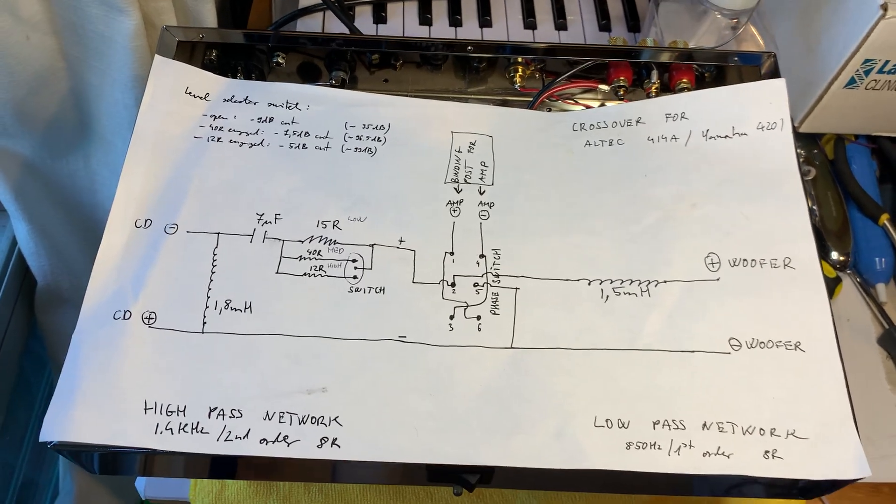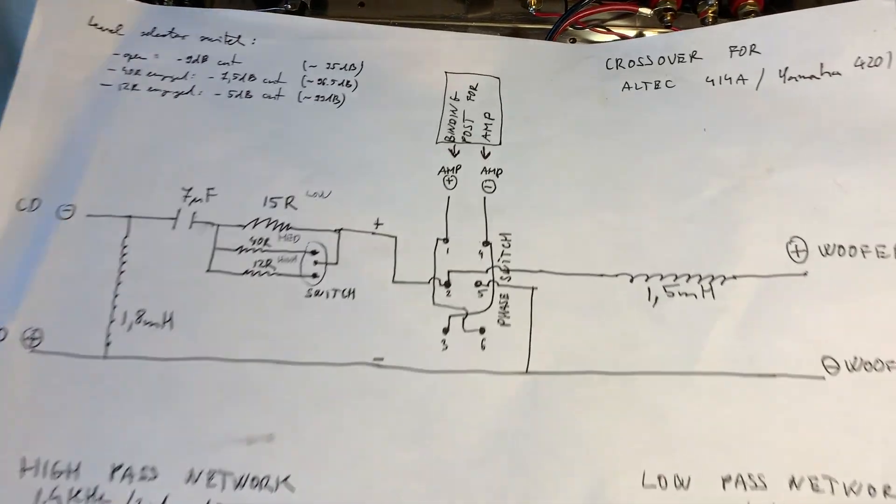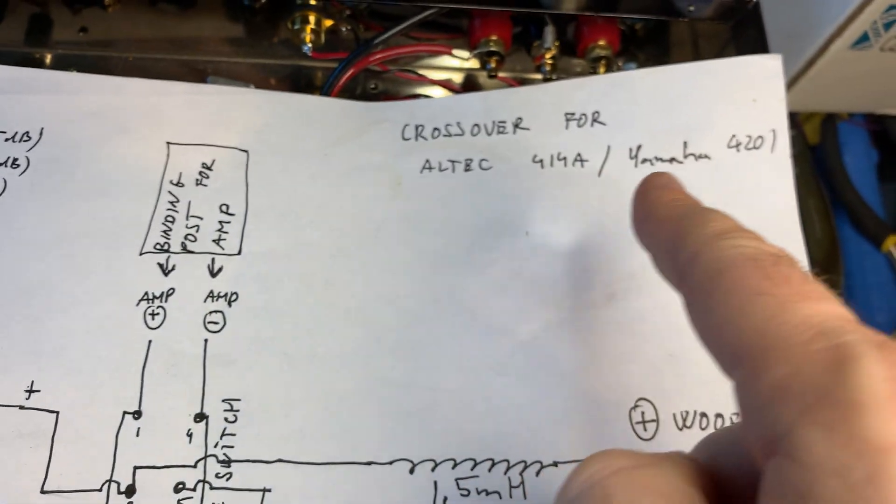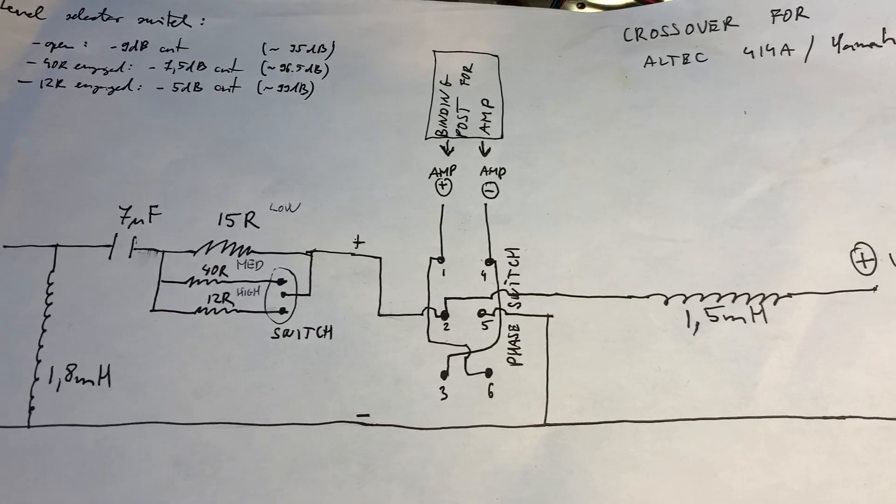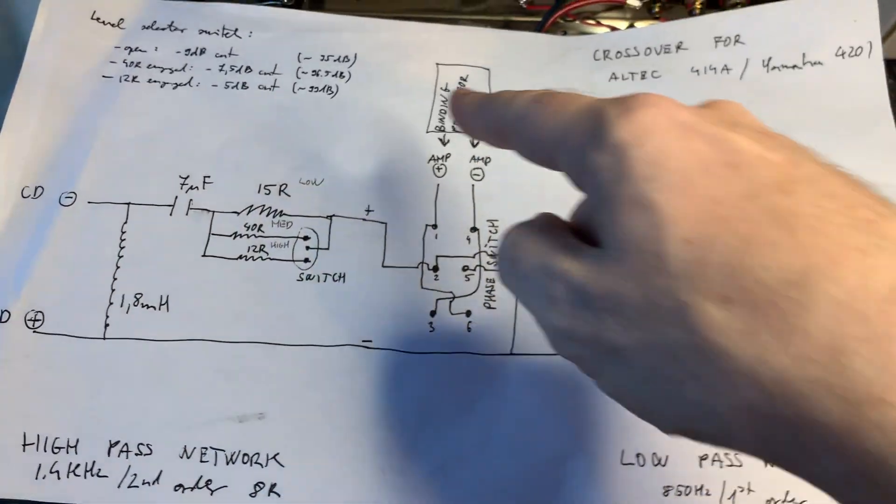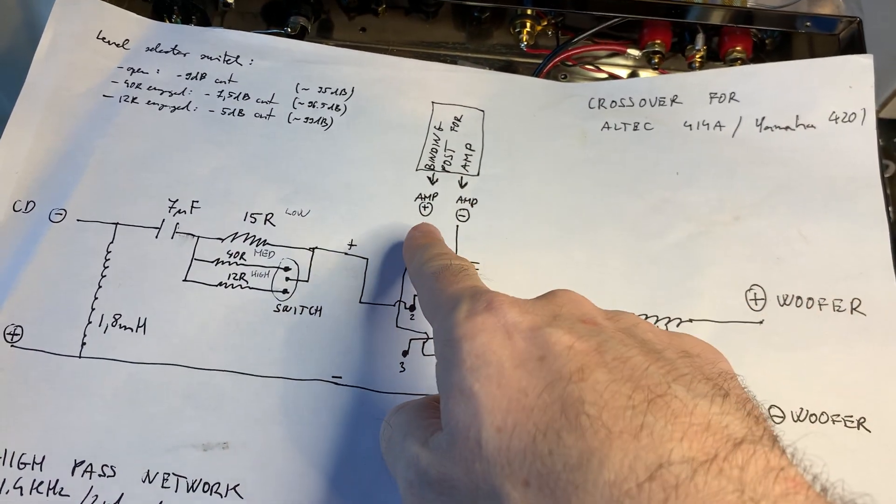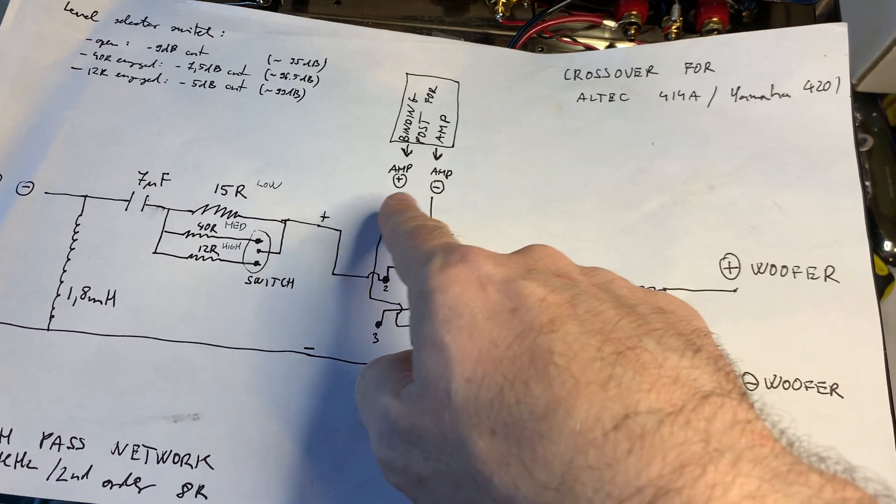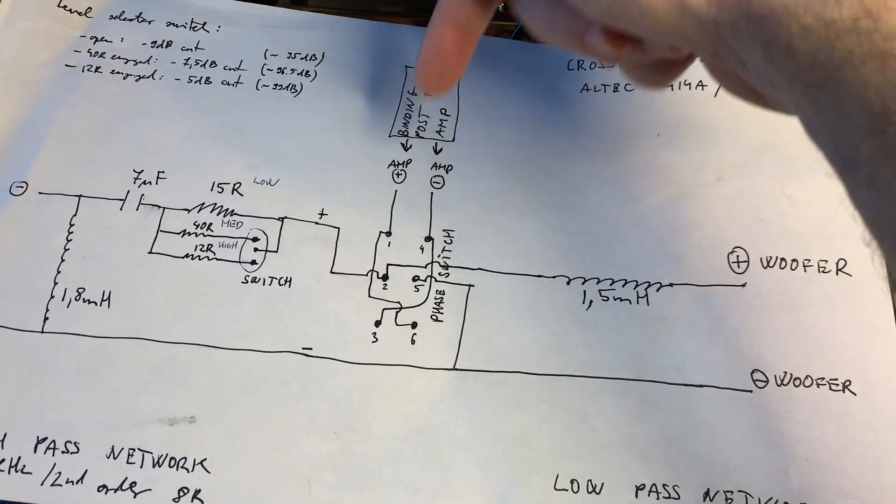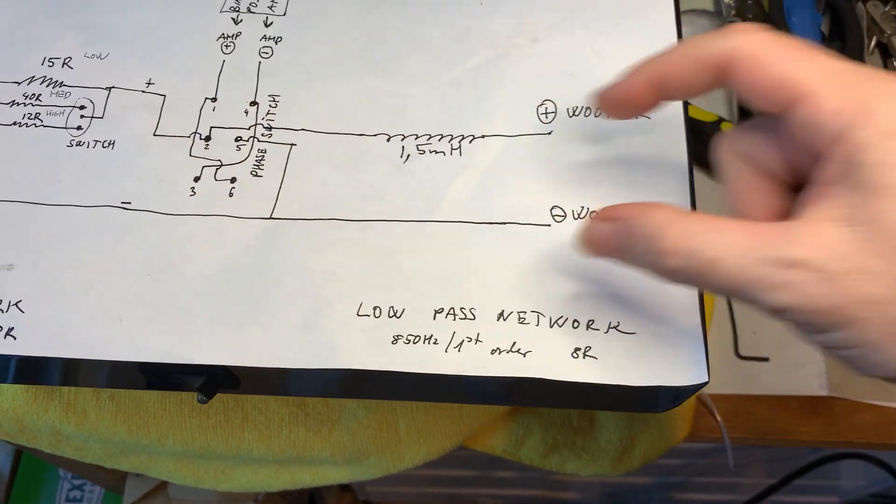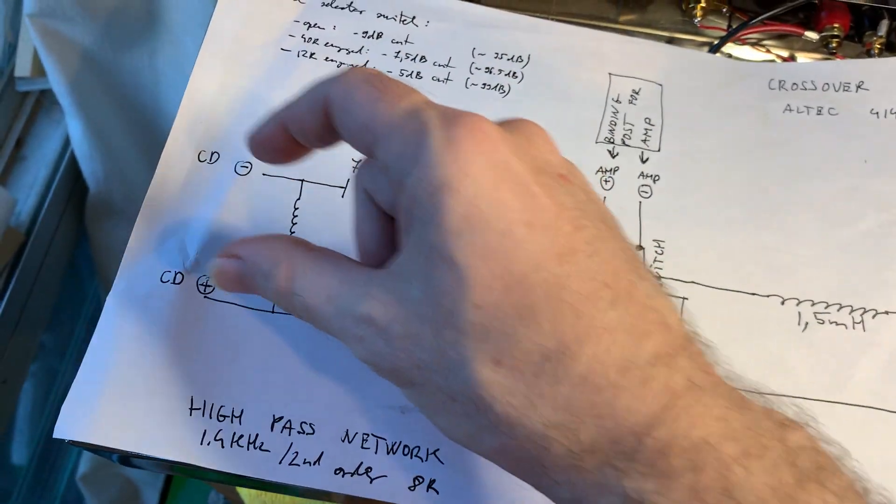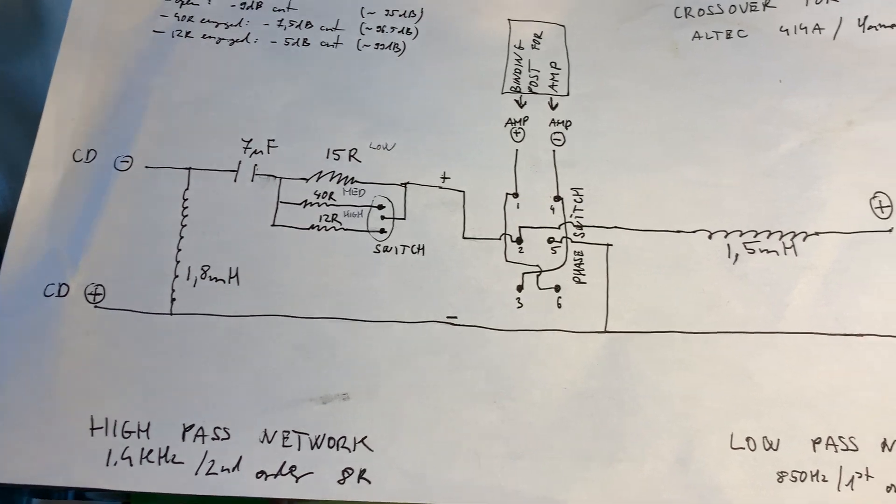Hi Terry, this is the schematics of the crossover for the Altec 415A Yamaha 4201. For the crossover, these are the input positions for your amp, so you connect it to your amp here, and then here for the woofer, and there for the compression driver.